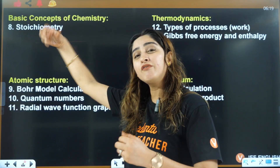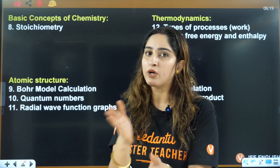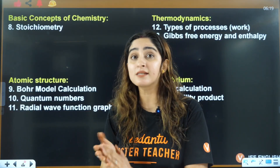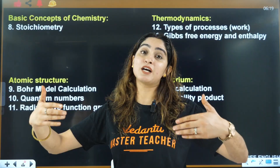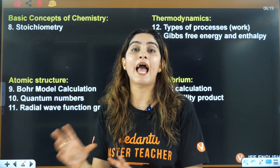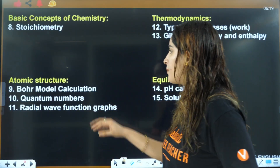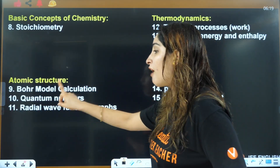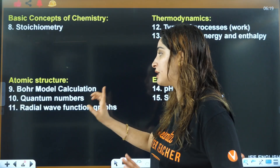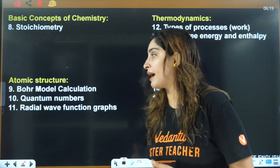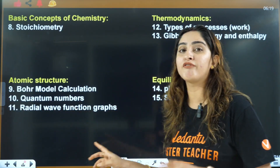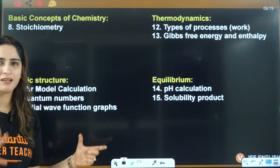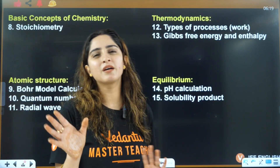From basic concepts of chemistry, even if they don't ask directly, they may ask it in correlation with organic chemistry. From atomic structure, you have the Bohr model calculations and quantum numbers. Radial wave function graphs are a very important topic that students usually skip, so I'm going to give you simple tricks to understand these graphs.